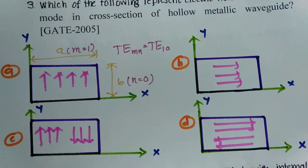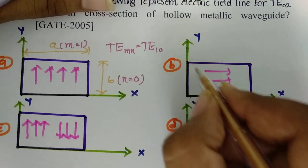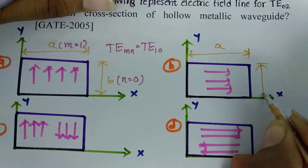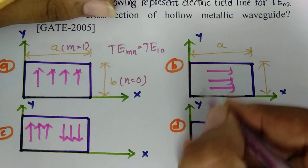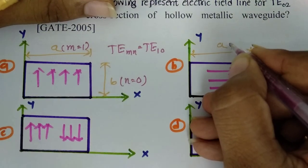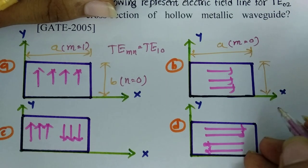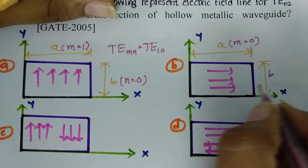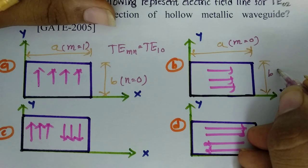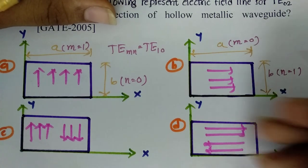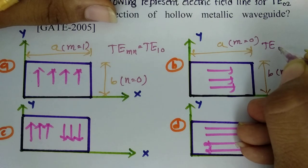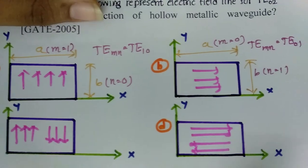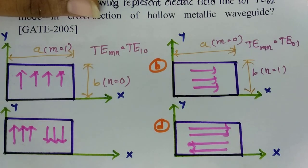For the next case, in the rectangular waveguide with dimensions A and B: with respect to A there is no change in the electric field, so M = 0. With respect to the smaller dimension B, the variation of electric field happens once, so N = 1. This gives us TE01 mode.